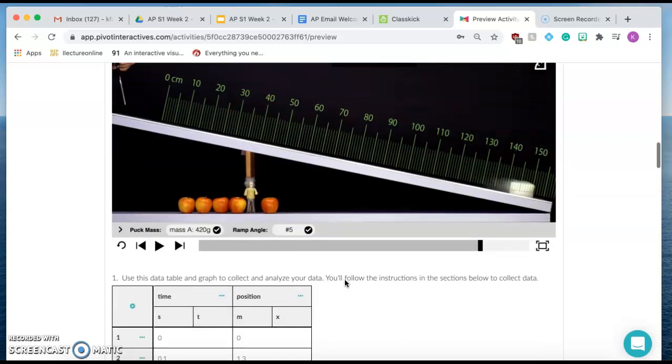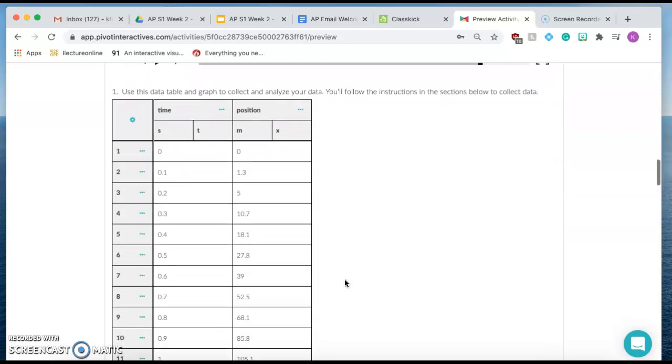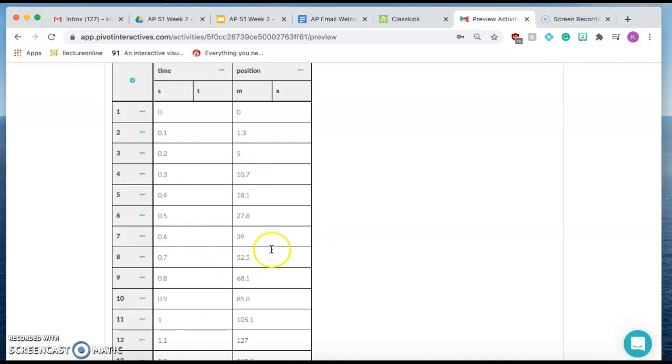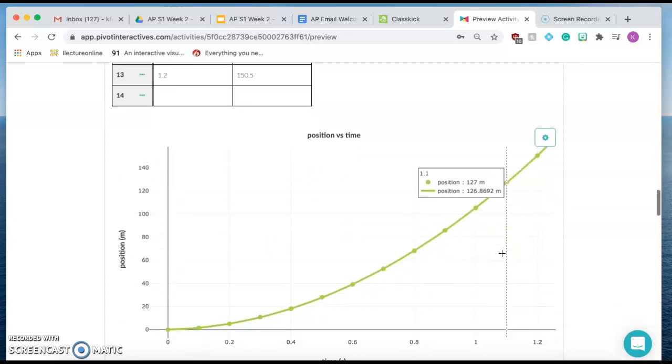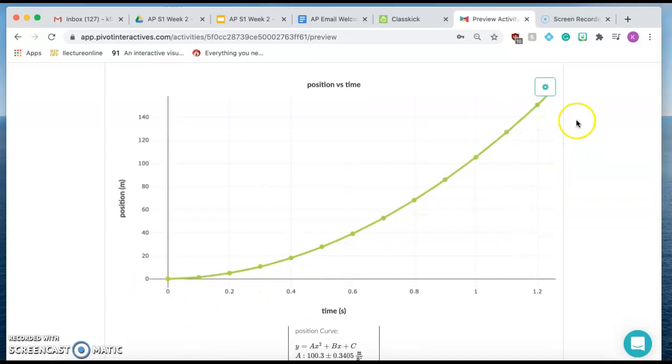Okay, so here you are in your graph, and by now, hopefully, you have made your position time data and you've answered the questions about the graph. Hopefully, you've seen that this should be a quadratic, right?